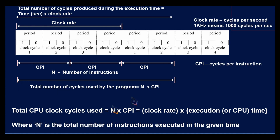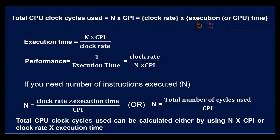So the total number of cycles used may be given in terms of N × CPI, or clock rate × time, where N is the total number of instructions executed in the given time. So total CPU clock cycles used = N × CPI = clock rate × time.